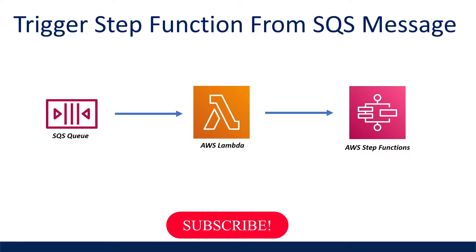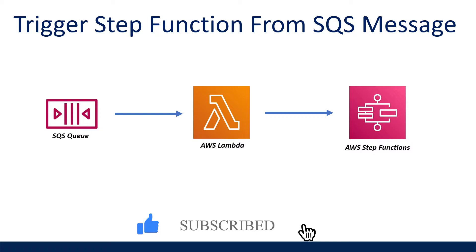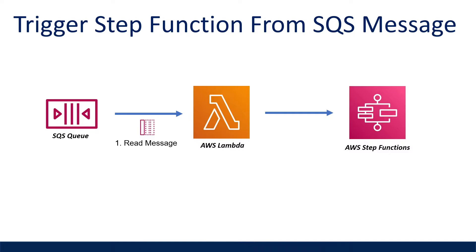In this video, I'm going to cover how to connect our SQS queue to our Lambda function as a trigger to receive our message, walk through the code required to read our message from our SQS queue, start our state machine with the payload passed from SQS, and then finally how to delete our message from our queue when we've successfully triggered our step function. This tutorial will be fairly code heavy in Python, and if you're interested in looking at the code I've used, see the link to my GitHub repo in the description below.